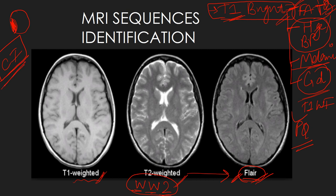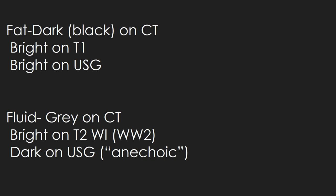STIR is a fat suppression sequence mainly used in musculoskeletal applications to visualize bone marrow edema better on the fat-suppressed image. Diffusion weighted imaging (DWI) is also a very important topic — one needs to know which substances restrict diffusion and which do not. An important trick: fat appears dark or black on CT, bright on T1-weighted MRI, and hyperechoic on ultrasound. The terms used are hyperechoic/hypoechoic on ultrasound, hyperintense/hypointense on MRI, and hyperdense/hypodense on CT.